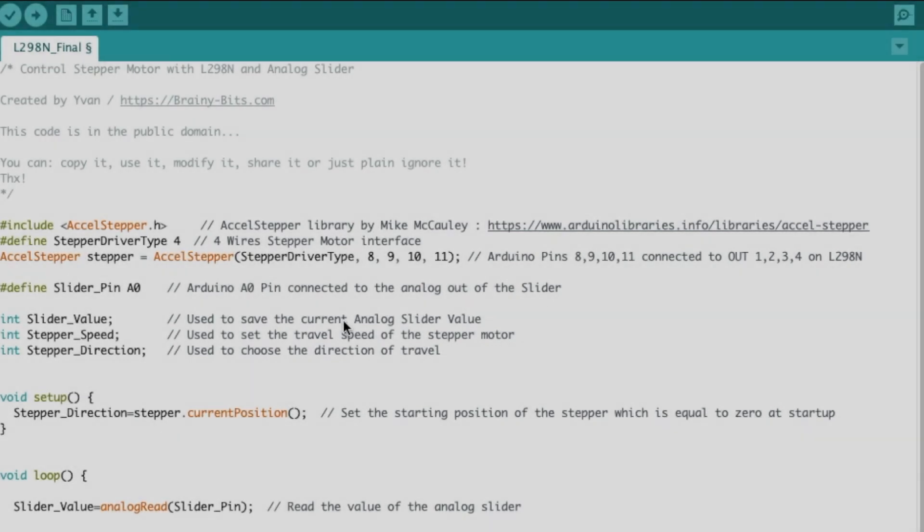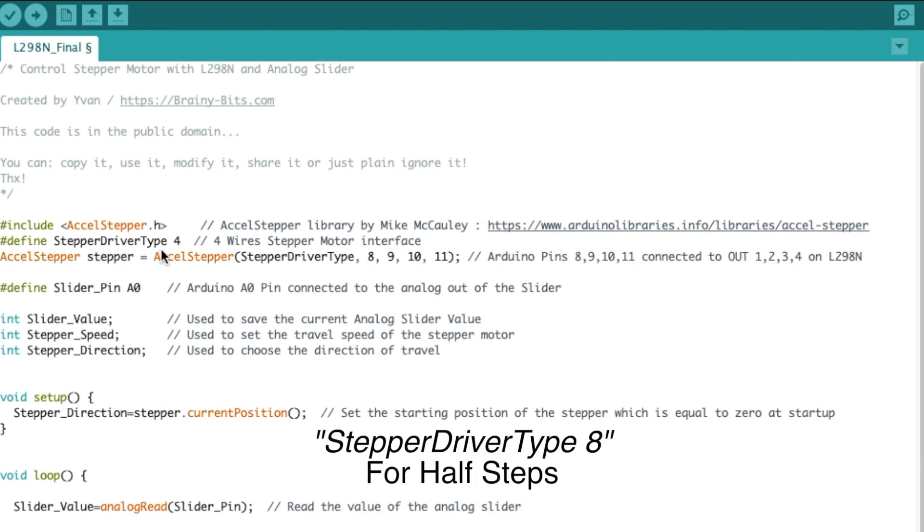All right. So let's have a look at the code we're going to use today. We're including, of course, the AccelStepper library. We've used that one many times before in other tutorials. It does work with the L298 driver that we're using today. Then we're defining the stepper driver type to four for four wires. That's the stepper motor we're using. And then we're defining the AccelStepper library using that information here.